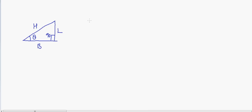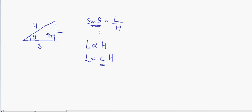Sine theta is defined as length divided by hypotenuse. What does that really mean? It means that length L is proportional to the hypotenuse H, or L equals a constant times H. In any triangle, the length is proportional to the hypotenuse, and that constant is sine theta — which depends on the angle. If theta is very high, hypotenuse approaches length; if theta is very low, length approaches zero. Let's take an example: if theta equals zero...